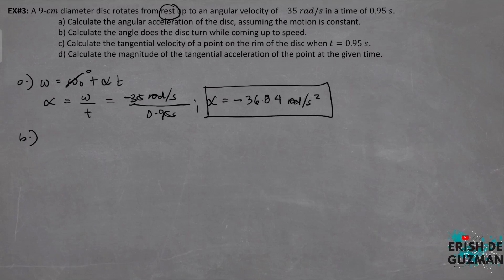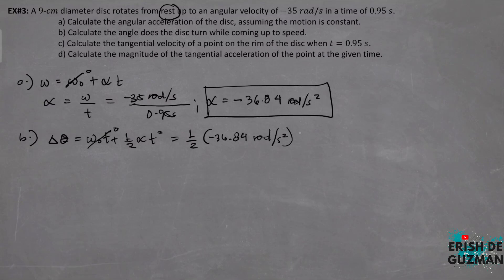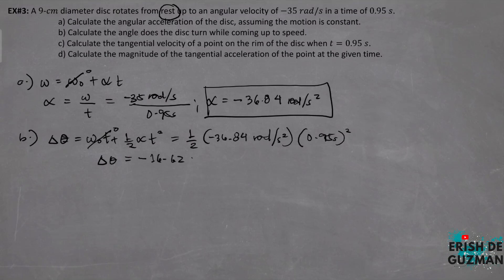For letter B, through what angle does the disk turn while coming up to speed? Using: angular position equals initial angular velocity times time plus one-half times angular acceleration times t squared. Since initial angular velocity is zero, substituting: one-half times negative 36.84 radians per second squared times 0.95 seconds squared. Angular displacement is equal to negative 16.62 radians.